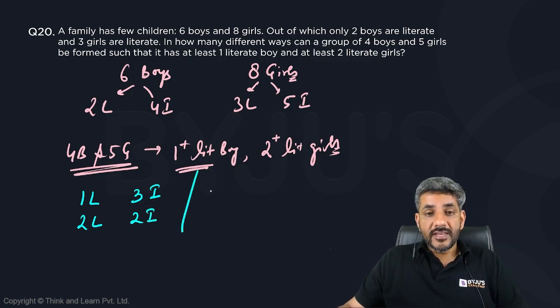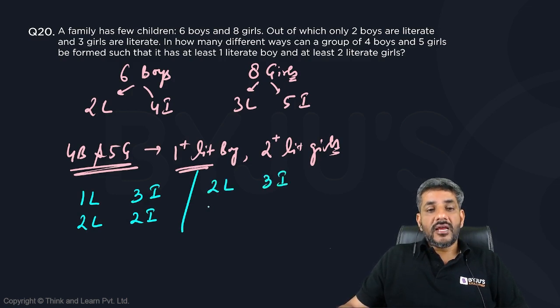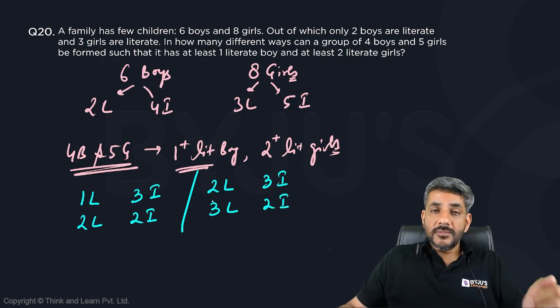What about the girls? Five girls are needed. I can have two literate girls and three illiterate girls, or I can have three literate girls and two illiterate girls. These are the only two possibilities for five girls.